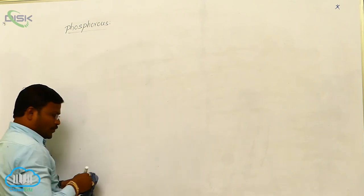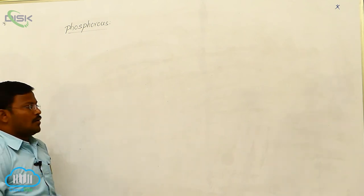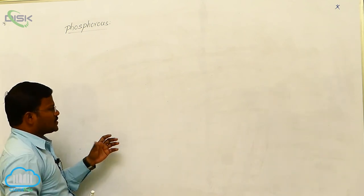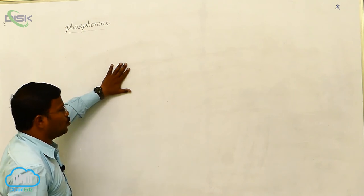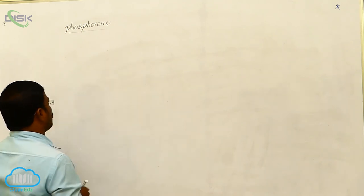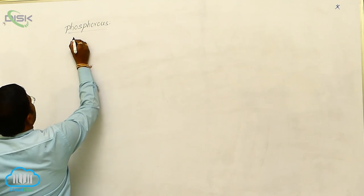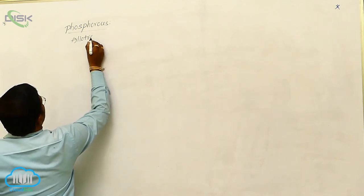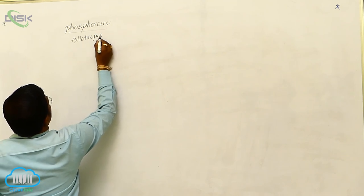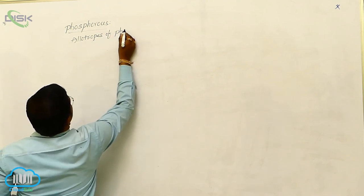As we know, most of the elements or almost all the elements belonging to 15th group will show allotropism. That means we can write allotropes of phosphorus.